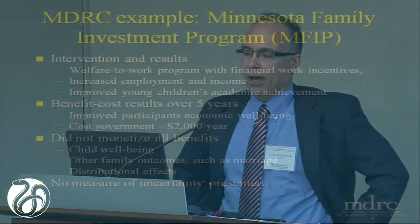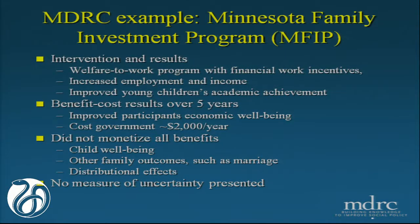The Minnesota Family Investment Program was fairly influential and got a lot of attention. It was a welfare-to-work program that provided financial work incentives to welfare recipients in Minnesota, as well as providing them with a mandate to work or participate in welfare-to-work services and provided them with some support such as help finding formal child care. The study did increase employment and income. MFIP also found that increasing family income had improvements for kids, and in particular it improved children's academic achievement, especially young children.